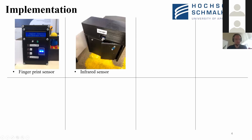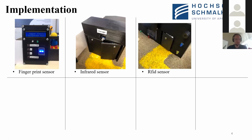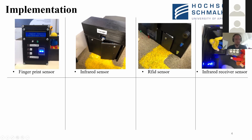Second, I have an infrared sensor for garage doors which automatically open by detecting the presence of a person or car. Third, I have an RFID sensor where the person doesn't need to carry any keys — they just need to press the card on the RFID module and the gate opens automatically. Fourth, I have an infrared receiver sensor controlled by a remote control, which can also work with any TV, DVD, or CD player remote.